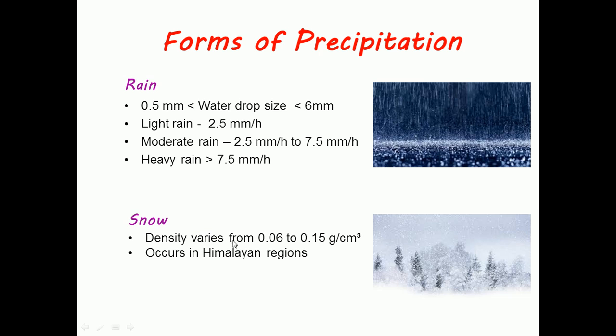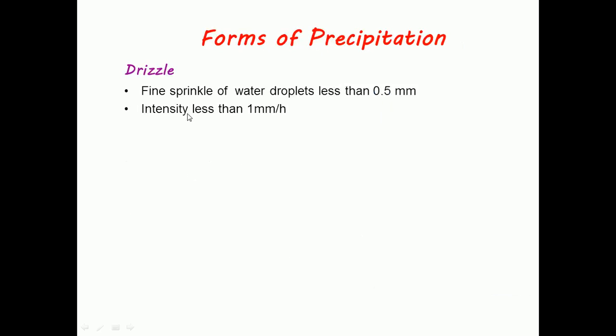Snow has density varying from 0.06 to 0.15 gram per cubic centimeter and it occurs in Himalayan regions. Drizzle is fine sprinkle of water droplets less than 0.5 mm with intensity less than 1 mm per hour.